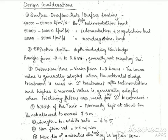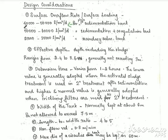We have the primary sedimentation tank and the secondary sedimentation tank — we are learning different types. Then, the degree of treatment — we have a classification. In this classification we have surface loading. For a first-degree tank, the surface loading is 40,000 to 50,000 liters per meter square per day.